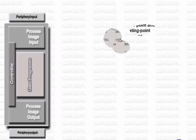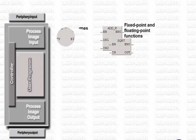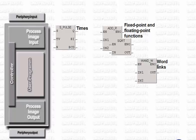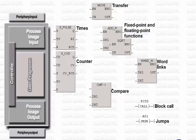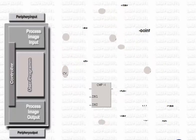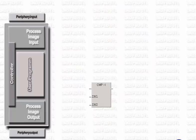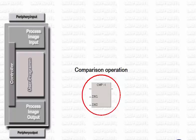LADDER can do more than just combine binary signals. It can also be used for effective and comfortable processing of digital values. LADDER offers for this purpose an extensive range of functions which allow you to handle almost any automation task. More complex functions, such as executing a comparison operation, are implemented by inserting a box that provides the required functionality within your program.